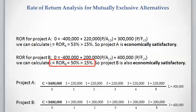Now let's calculate rate of return for project B. We write the equation, and the rate of return for project B is 50%, which is higher than the 15% minimum rate of return. So project B is also economically satisfactory. Because project A has a higher rate of return with the same amount of investment, we can conclude that project A has to be selected.